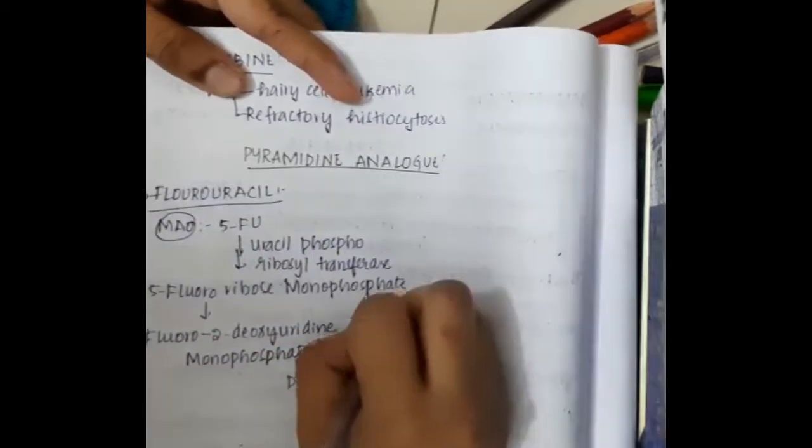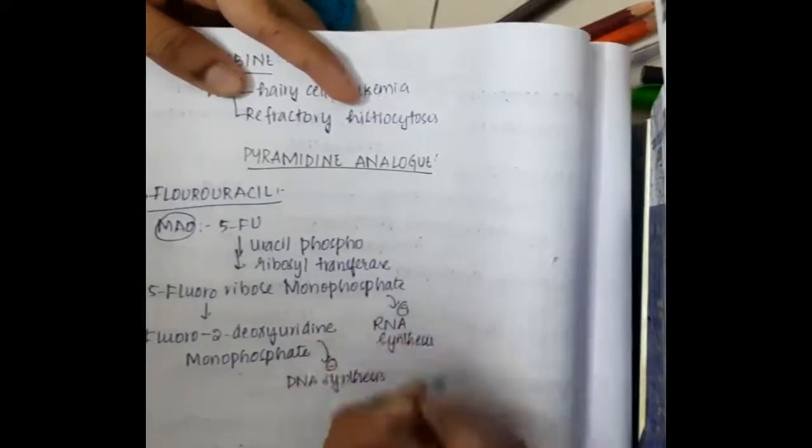5-fluoro-2-deoxyuridine monophosphate inhibits DNA synthesis. 5-fluorouridine monophosphate also inhibits RNA synthesis.